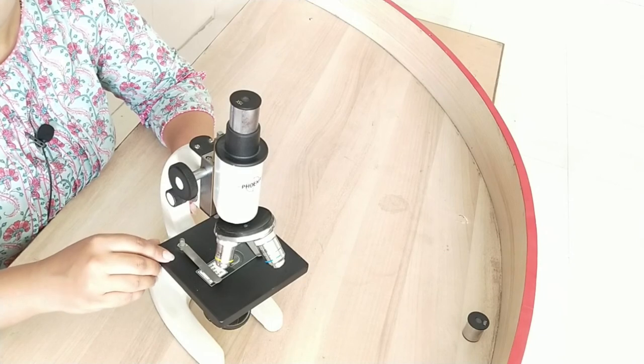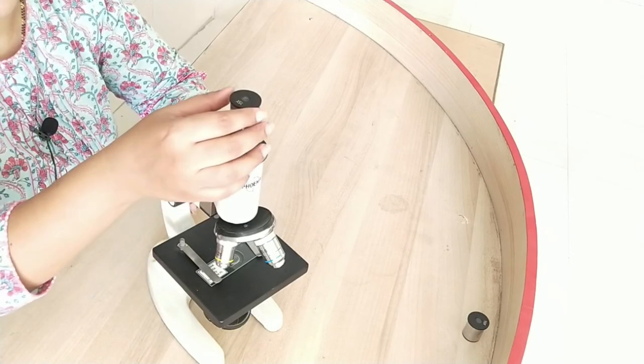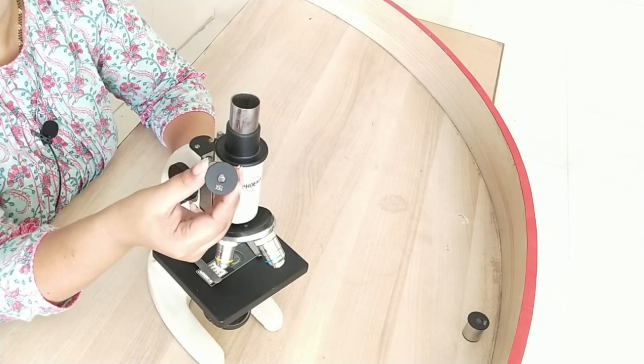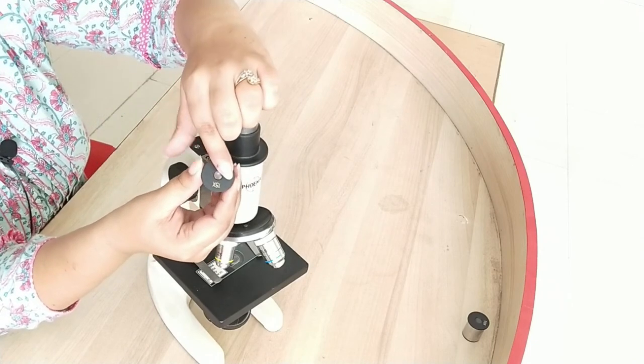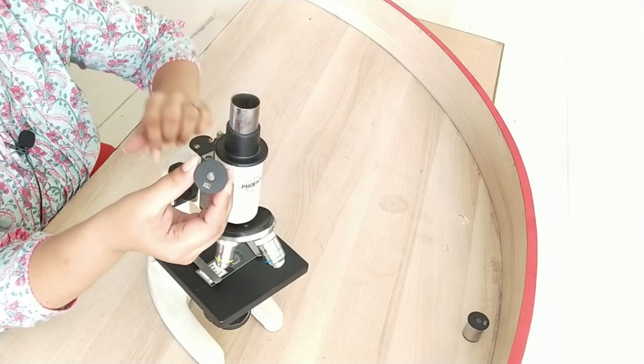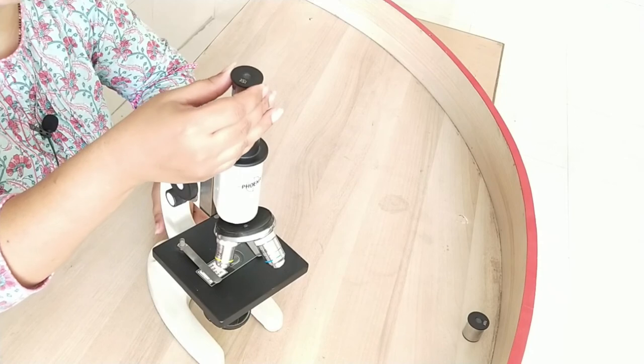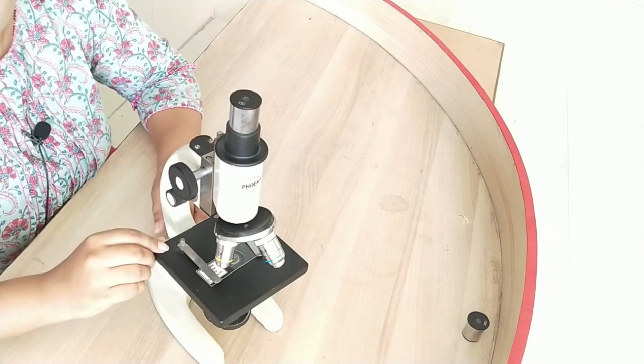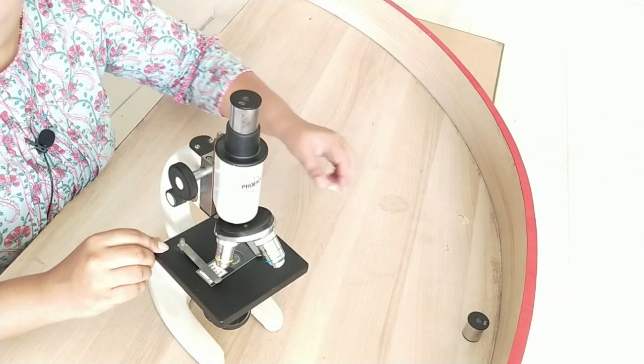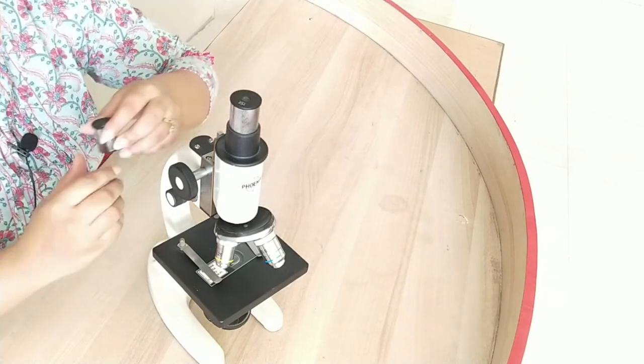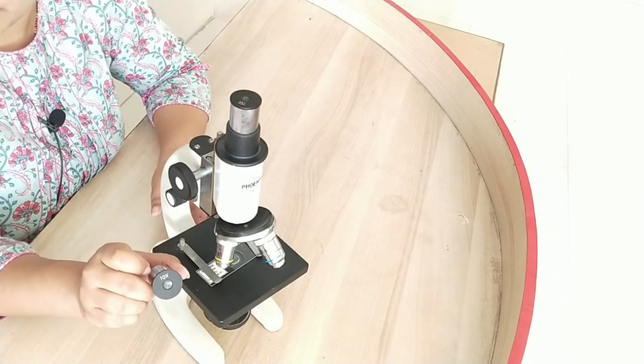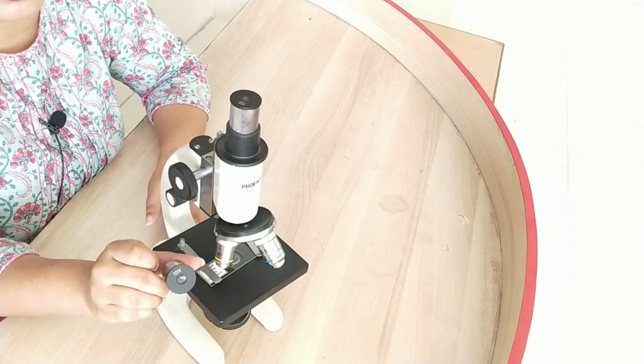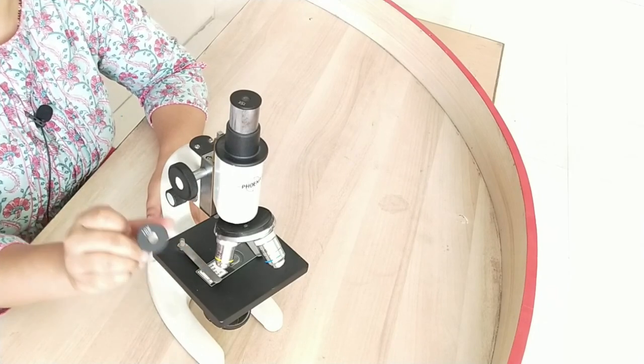Now here you can see that something is written on it. It is 15x. This means it magnifies the object size to 15 times. Similarly we have eyepiece of 10x also which magnifies the image of the object by 10 times.